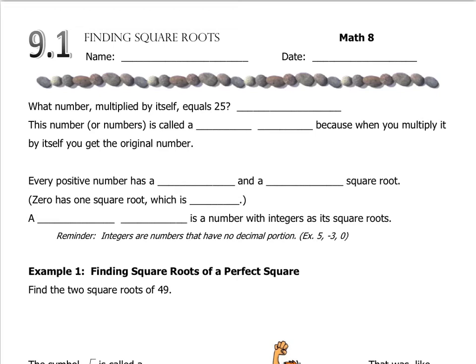Chapter 9 is about different types of roots — square roots, cube roots — and also this really important, powerful, timeless formula called the Pythagorean Theorem.